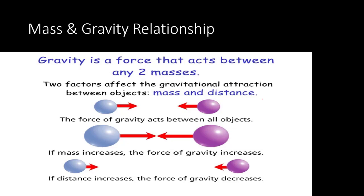Gravity is a force that acts between any two masses. Two factors affect the gravitational attraction between objects: mass and distance. The force of gravity acts between all objects — everything in this universe has that gravitational force. If the mass increases, the force of gravity increases as well. But if the distance increases, the force of gravity decreases. As two objects get farther away from each other, the gravitational pull gets smaller and smaller — kind of like when you pull two magnets apart far enough that they're no longer attracted to each other.